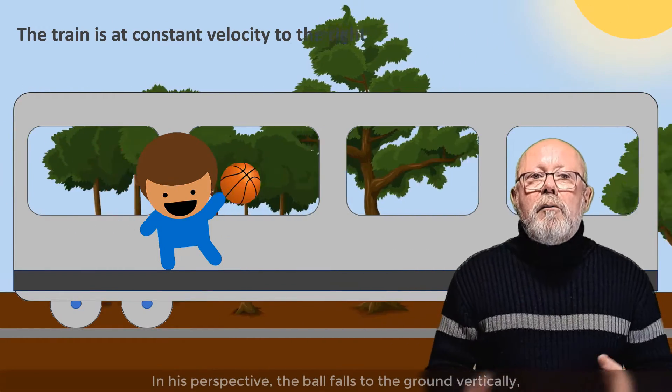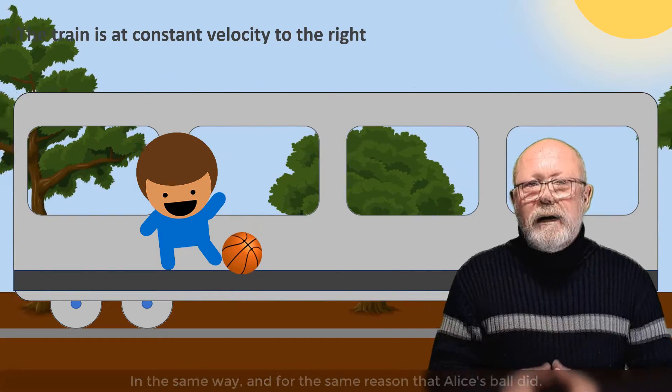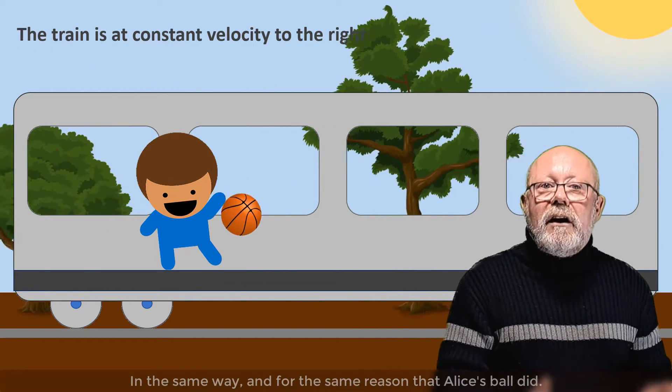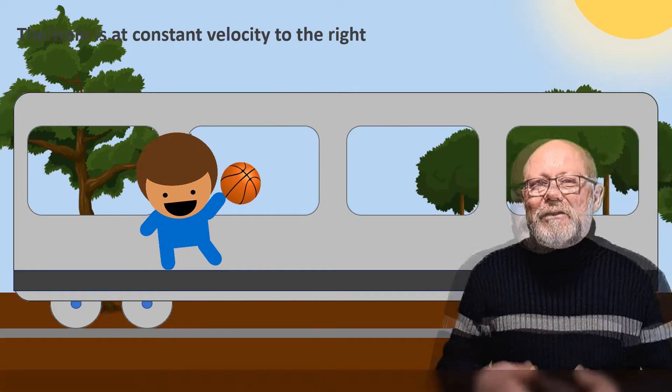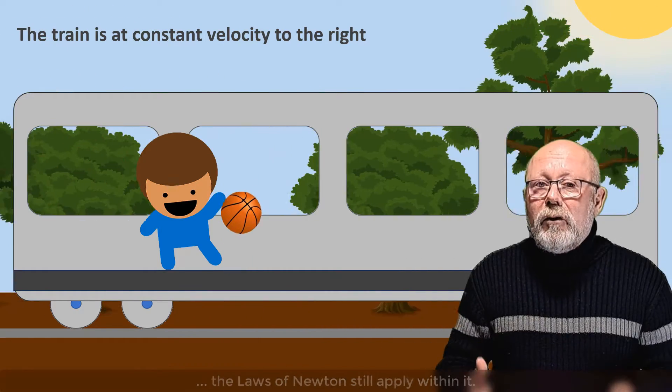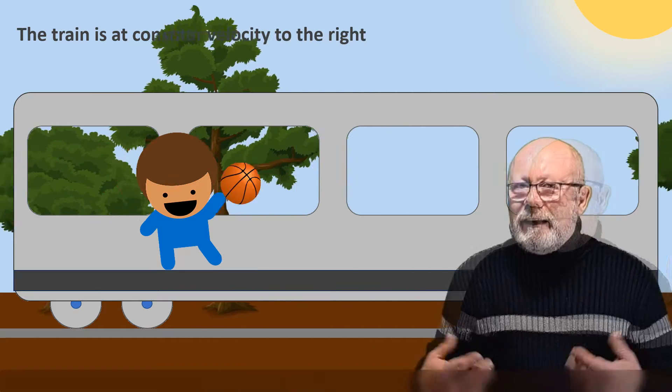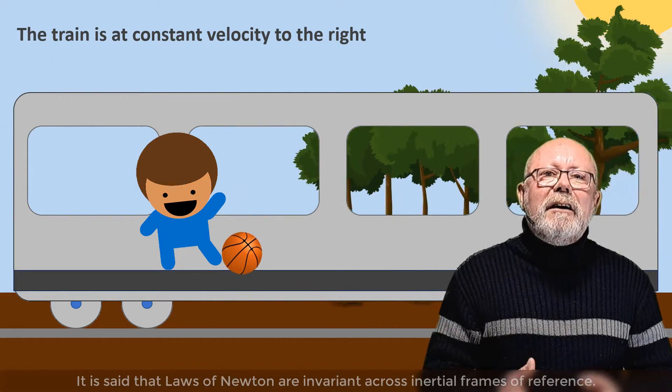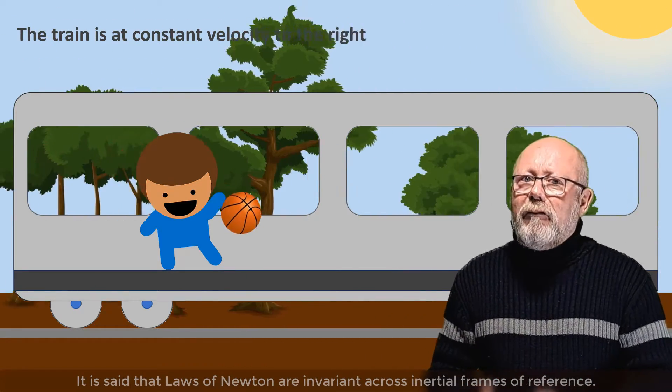In his perspective, the ball falls to the ground vertically, in the same way and for the same reasons that Alice's ball did. So you see, even if Bob's frame of reference has a velocity, the laws of Newton still apply within it. It is said that the laws of Newton are invariant across inertial frames of reference.